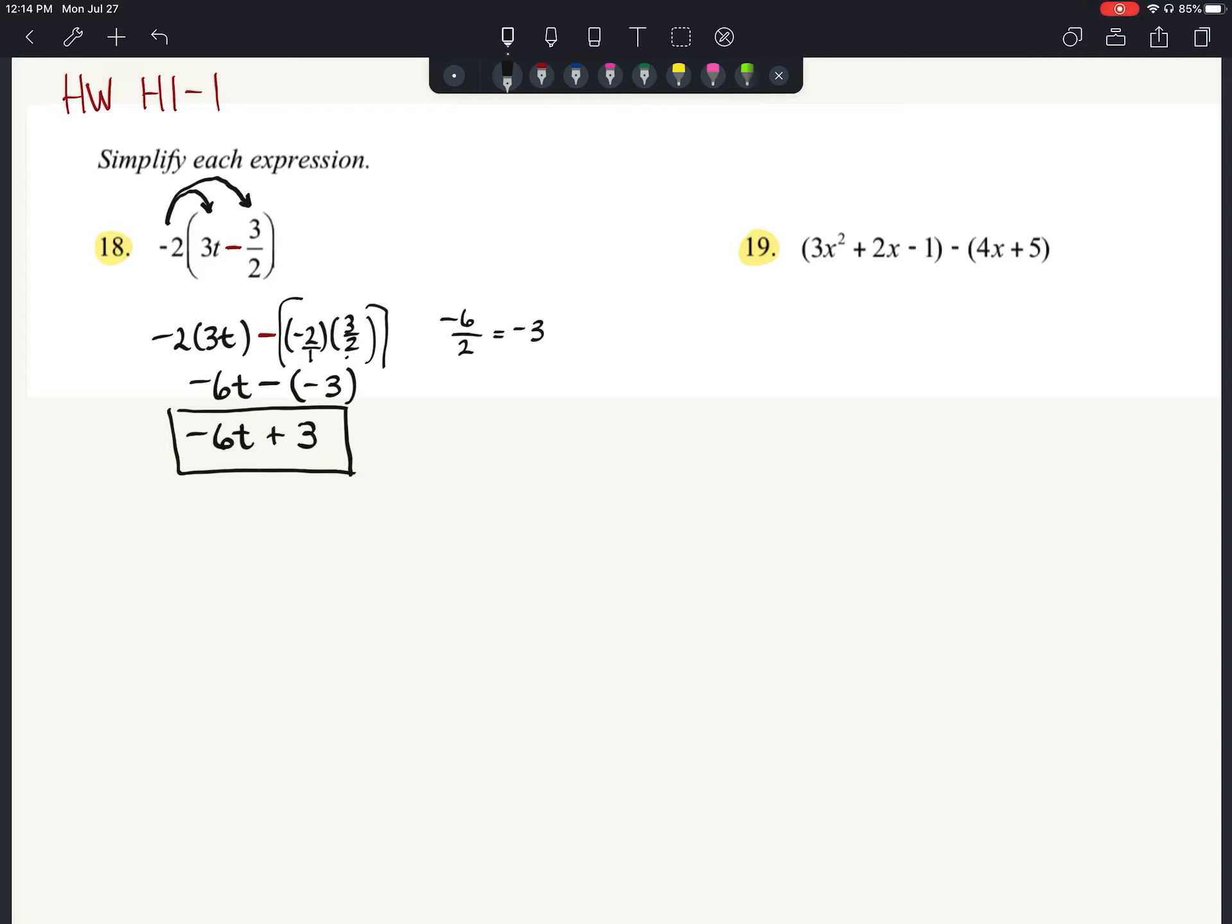Number 19, we have 3x squared plus 2x minus 1, and then we are subtracting the quantity of 4x plus 5. As we look at this first set of grouping symbols here, there's nothing in here that can simplify down, and we're not multiplying that quantity by anything. So we can just go ahead and just pull that out as 3x squared plus 2x minus 1.